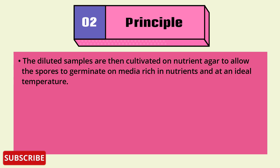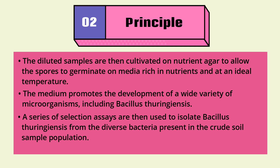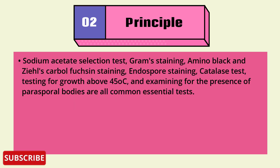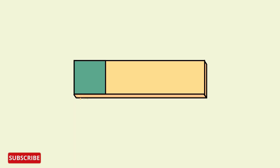The diluted samples are then cultivated on nutrient agar to allow spores to germinate on a medium rich in nutrients at an ideal temperature. The medium promotes the development of a wide variety of microorganisms including Bacillus thuringiensis. A series of assays are then used to isolate Bt from diverse bacteria in the crude soil sample population: sodium acetate selection test, Gram staining, amido black and Ziehl–Carbol fuchsin staining, endospore staining, catalase test, testing for growth above 45°C, and examining for the presence of parasporal bodies.